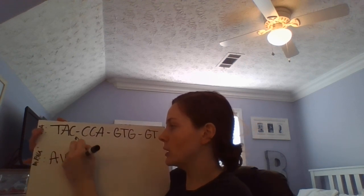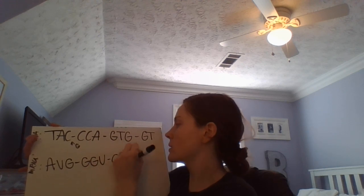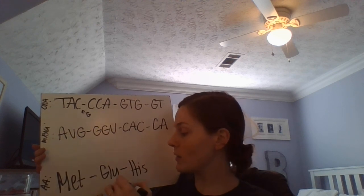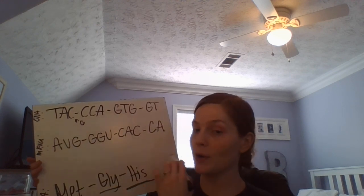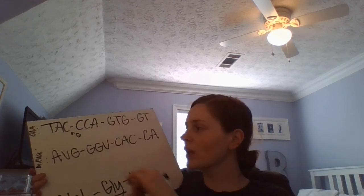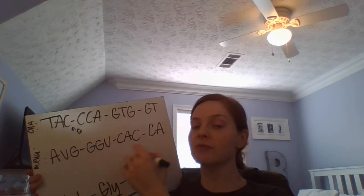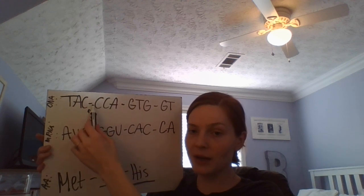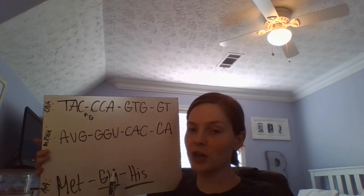When you make your mRNA: T pairs with A, giving AUG, GGU, CAC, CA. AUG still codes for methionine, so that one didn't change. GGU codes for glycine. CAC codes for histidine. And the last part doesn't even code for anything because it's just two bases. So this is definitely a frameshift because the amino acids changed and we're missing a whole amino acid. A frameshift mutation is called that because it changes the reading frame — wherever you have that deletion or insertion, everything after that is changed. That's why we call them frameshift mutations.